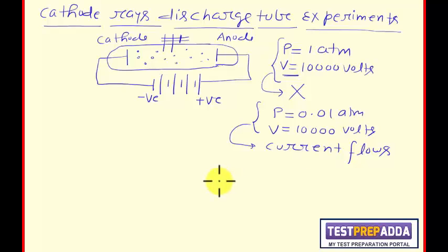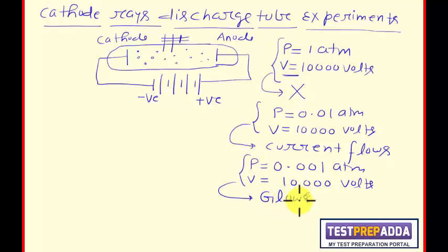Now something happened. When in any experiment something happens, in that situation our expectations will increase. So here also, same thing. We, since this happened when we decreased pressure, so we tried to decrease this pressure further. And this time we kept pressure about 0.001 atm, keeping the same voltage 10,000 volts.